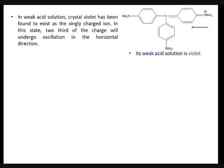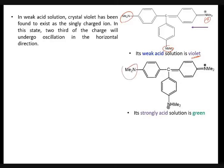There is a possibility of a number of resonance structures because only one plus charge is on the nitrogen atom, and that's why it's showing intensity in the color. In strong acidic conditions, the intensity is going downward because only one position remains where there is a chance of resonance.